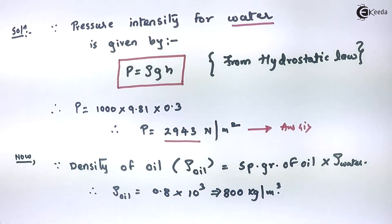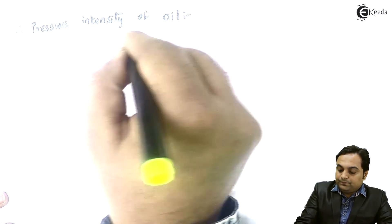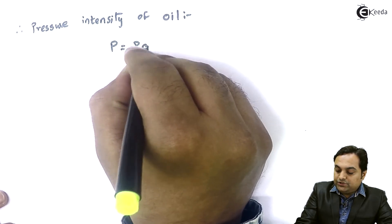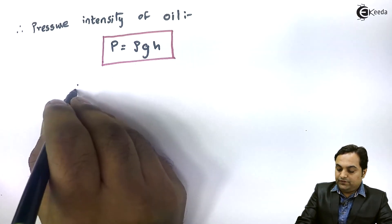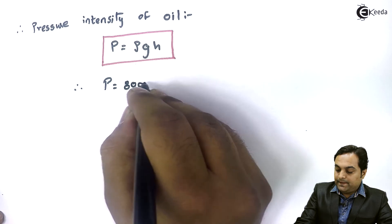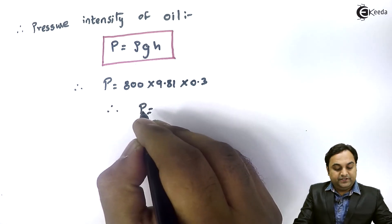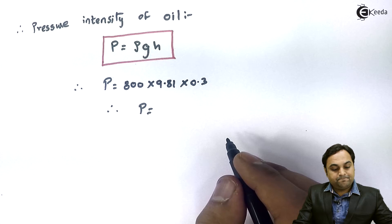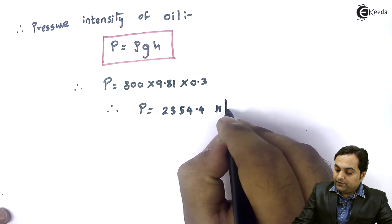Therefore, pressure intensity of oil P is equal to rho times G times H, using the same formula. So P equals 800 into 9.81 into 0.3, which gives the answer 2354.4 Newton per meter square. This is our second answer.